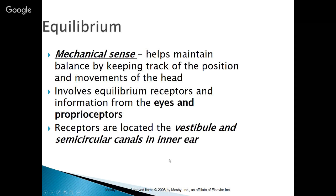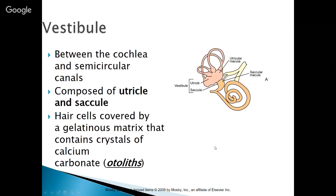Equilibrium is also part of this system — it's the mechanical sense. It helps maintain balance by keeping track of the position and movements of the head. It involves equilibrium receptors and information from both the eyes and the proprioceptors, taking in all of this information. The receptors are located in the vestibule and the semicircular canals within the inner ear. Between the cochlea and the semicircular canals lies the vestibule, which is composed of two structures: the utricle and the saccule.